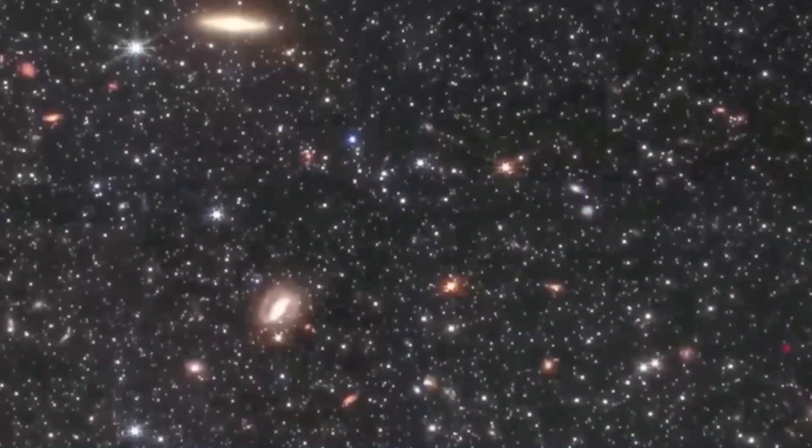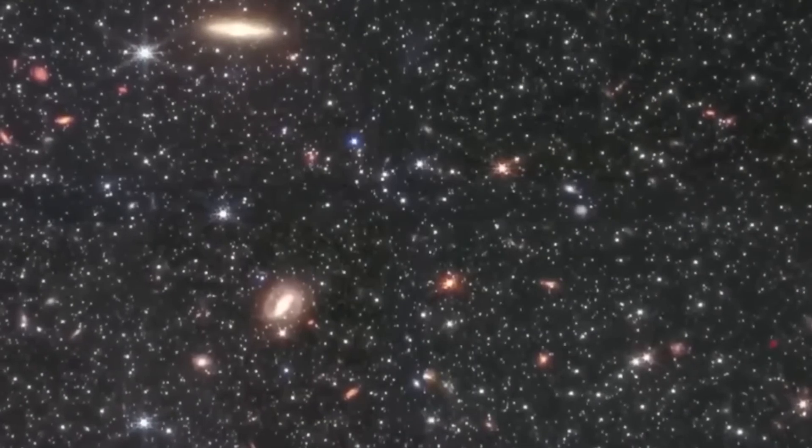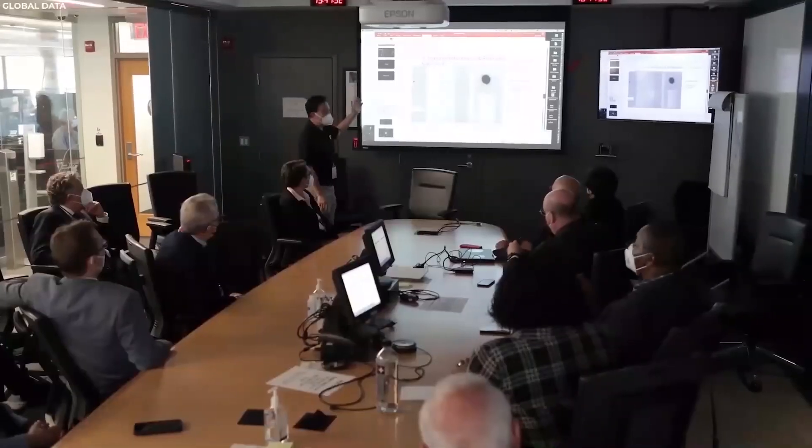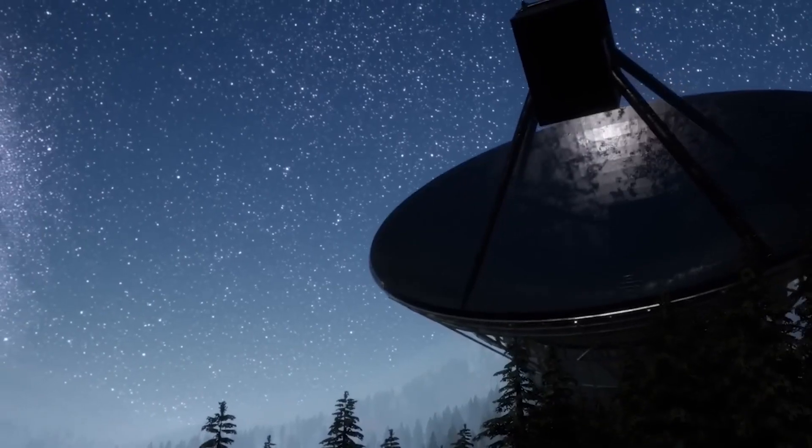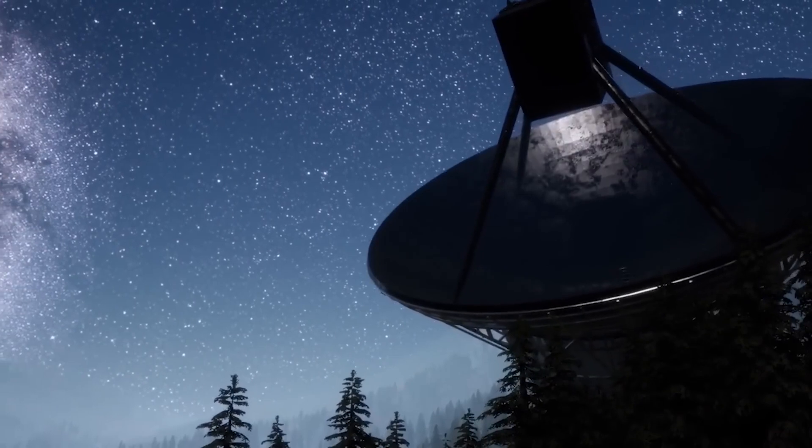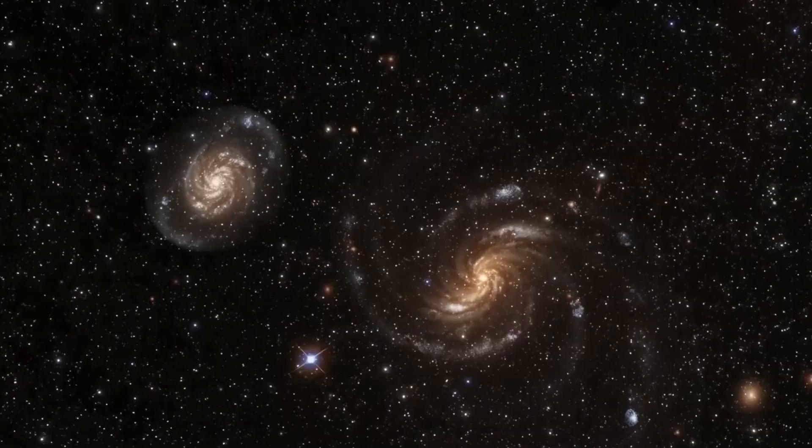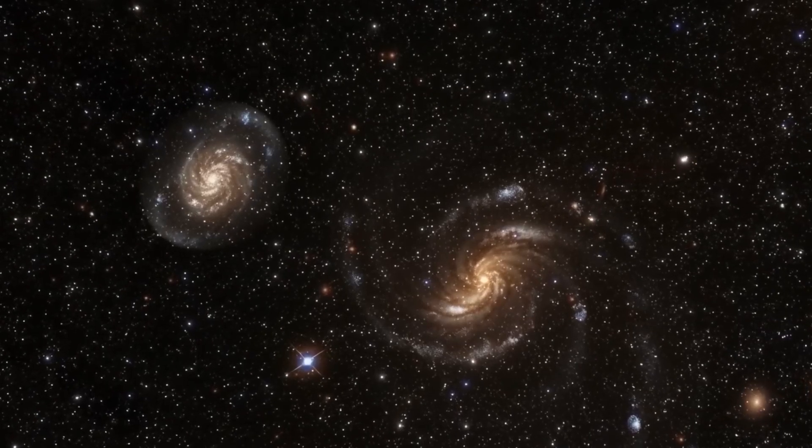When we refer to the edge of the universe, it is important to understand what the observable universe is. This concept includes everything we can see, measure, and study from Earth or through our telescopes and space probes. It is composed of stars, galaxies, and other celestial objects that are within our range of observation.